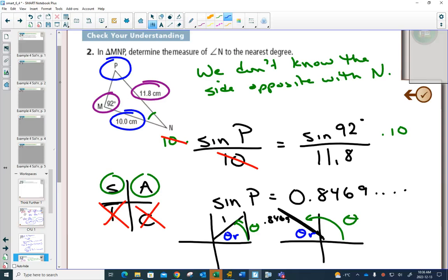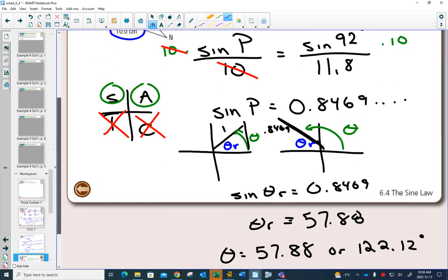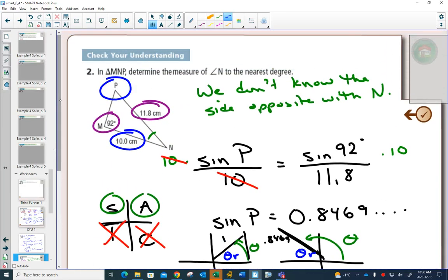We just said, and it says to the nearest degree, so I'm going to round those to 58 and 122. It means that angle P is either 58 or 122. Do both answers make sense? Which one doesn't make sense? And how come you're saying 122 doesn't make sense? Yeah. Angles in a triangle always add up to 180 degrees. That is always true.